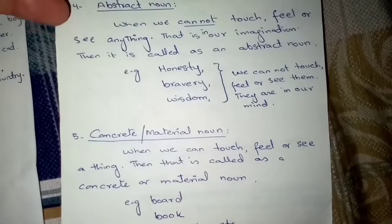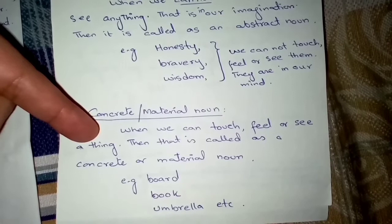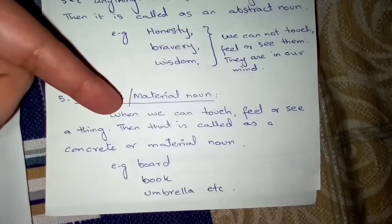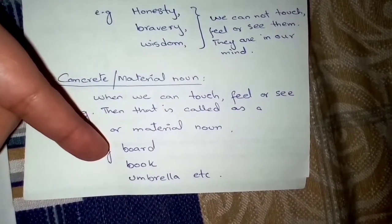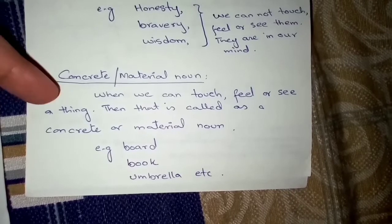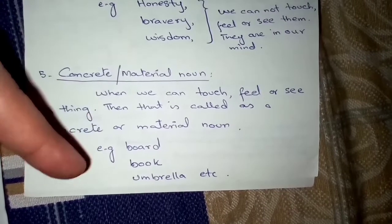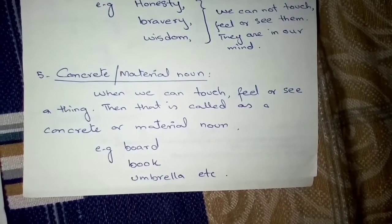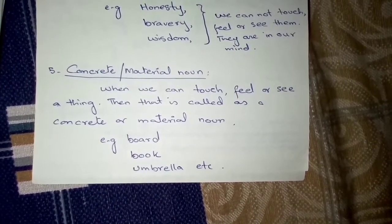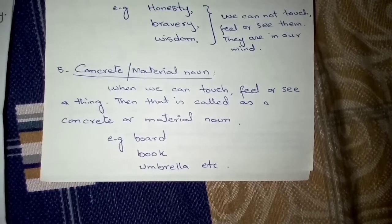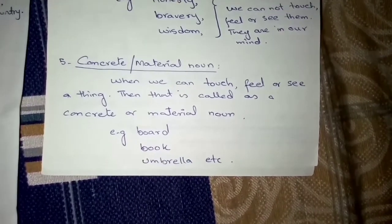The next type is concrete noun, or material noun. Concrete noun is the opposite of abstract noun. Concrete noun is when we can touch, feel or see a thing. For example, a boat — you can touch the boat, feel whether it is hard or soft, and see what color it is. Same is the case with book, umbrella, and cloth. These are all called concrete nouns, or material nouns.